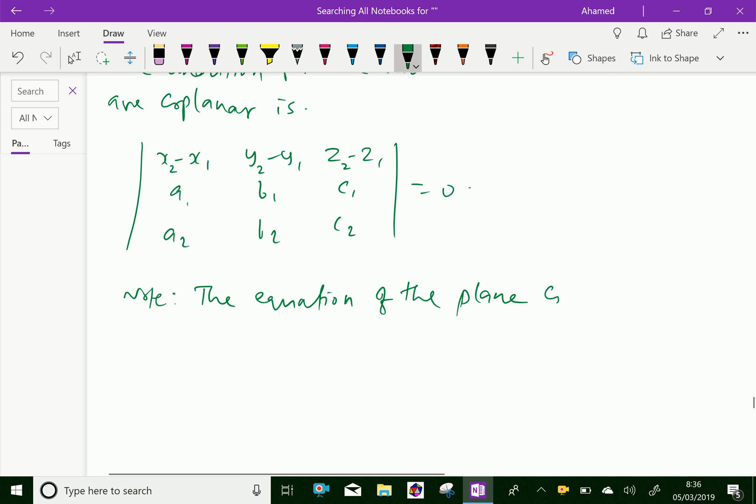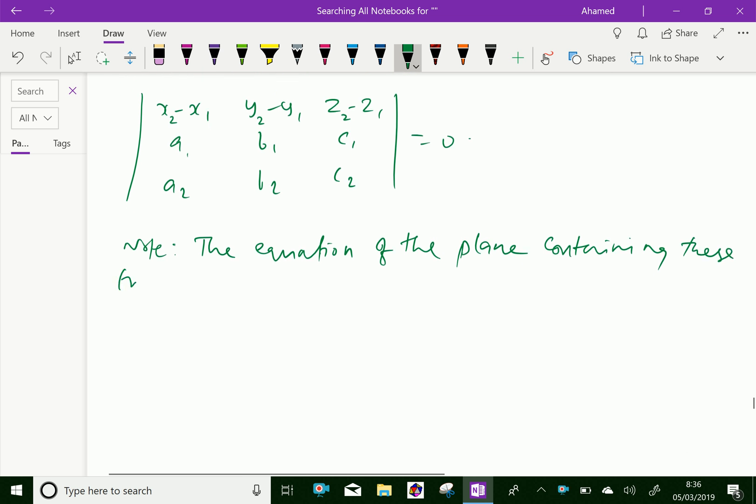The equation is the determinant of x minus x1, y minus y1, z minus z1, a1, b1, c1, a2, b2, c2 equals zero. This is the equation of the plane containing these lines.